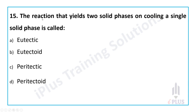Question 15: A reaction that yields two solid phases on cooling from a single solid phase is called — options are eutectic, eutectoid, peritectic, or peritectoid. Since all three components involved are solid, this is an '-oid' reaction — either eutectoid or peritectoid.